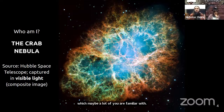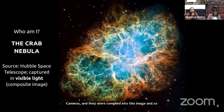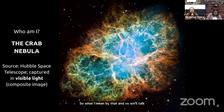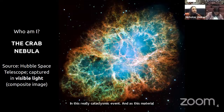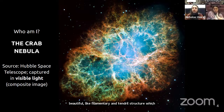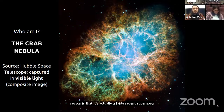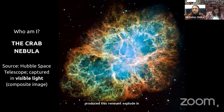What we're actually seeing here is called a supernova remnant. We had this massive star that exploded and collapsed in on itself, spilling a bunch of material every which way in a really cataclysmic event. As this material starts hitting the dust and gas between the stars, you get this really interesting and beautiful filamentary tendril structure. The Crab Nebula is one of the remnants we've studied the most. It's a fairly recent supernova — Chinese astronomers actually saw it explode in 1054 CE, only about a thousand years ago.